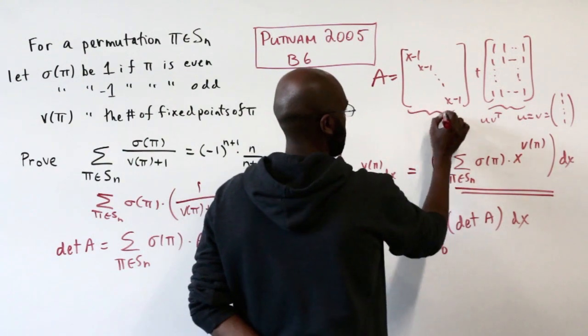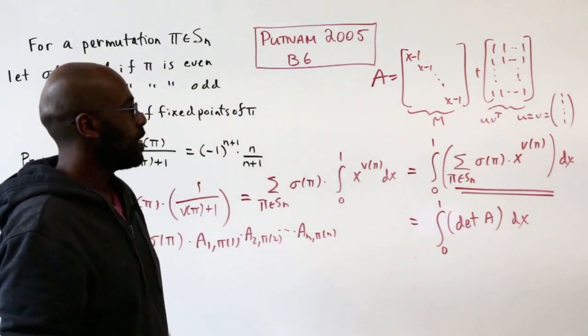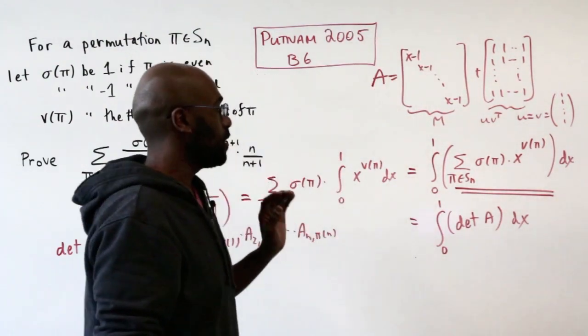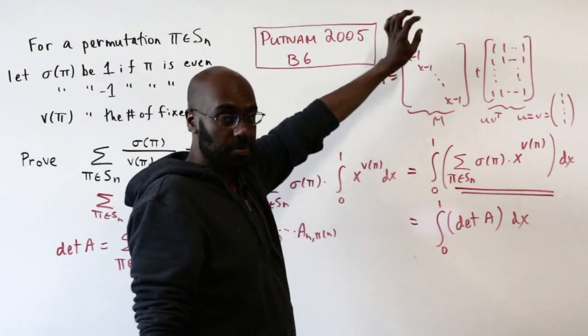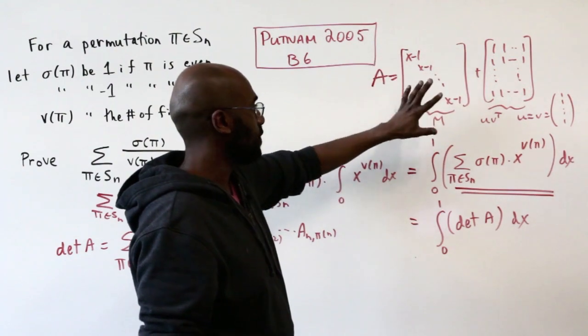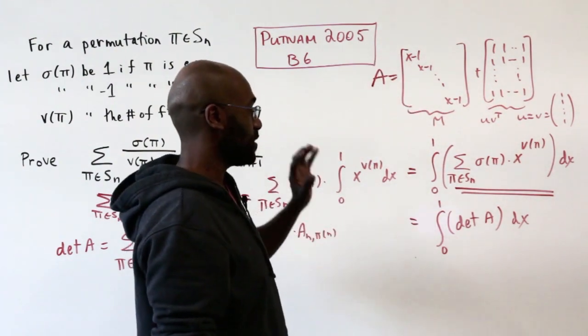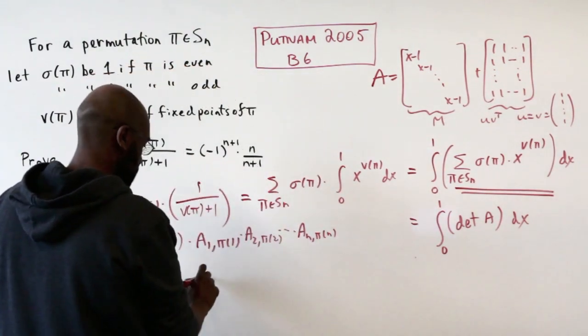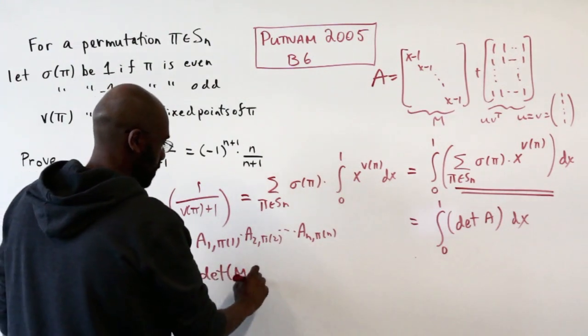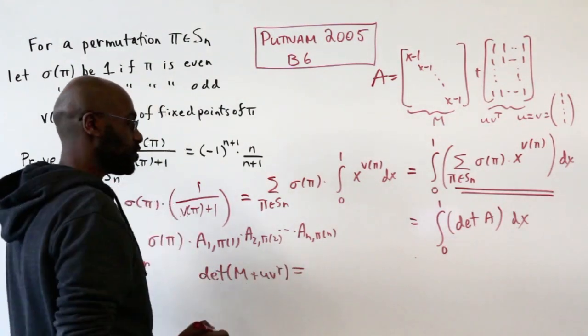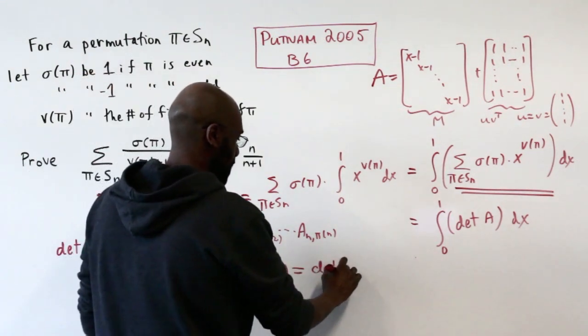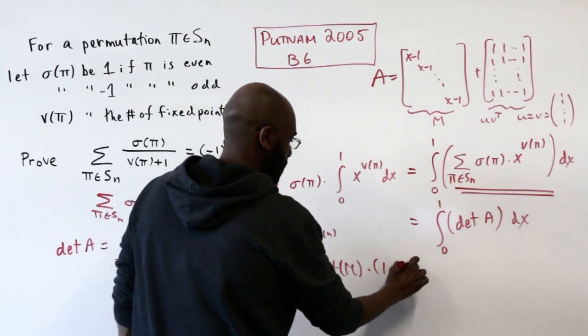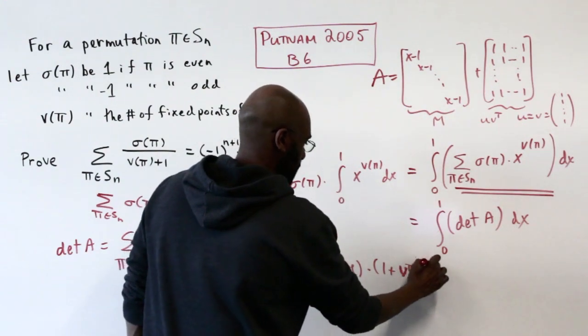I'm going to call this matrix here M. Now M is almost always invertible. The only time it's not invertible is when x is 1. So I'm going to think of this as being a variable x and look at this determinant for various values of x. If I pick a value of x that's not 1, I'll be able to compute this determinant. The determinant of A is the determinant of M plus uv^T, which by the matrix determinant lemma is the determinant of M times (1 + v^T M^(-1) u).